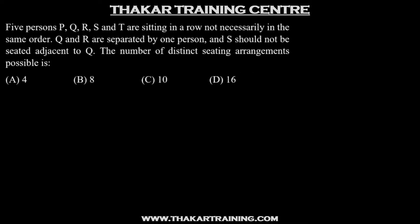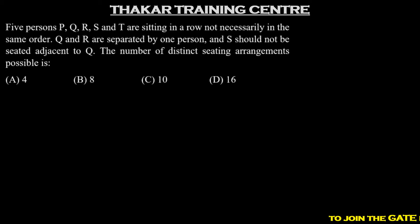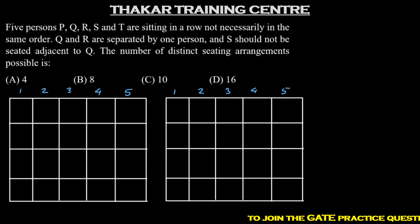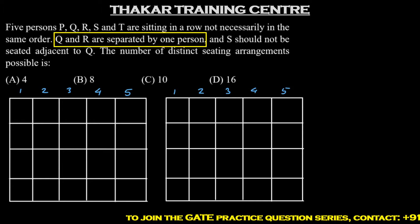So there are two conditions that are to be satisfied. One is that Q and R should be separated by one person, and S should not be seated adjacent to Q. So let's see what are the different seating arrangements possible. The first condition says Q and R should be separated by one person.